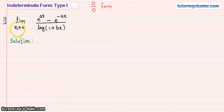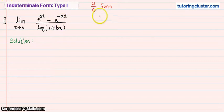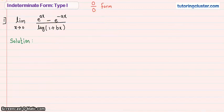Let us put x equal to 0 first and check which form it is — indeterminate or not. e to the power 0 is 1, so 1 minus 1 gives zero in the numerator, and log of 1 is also zero. So it is a zero by zero form, and we have to use L'Hôpital's rule.